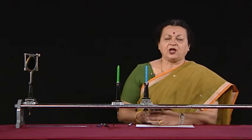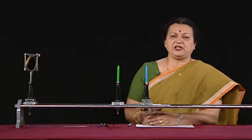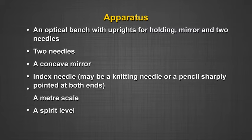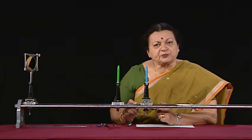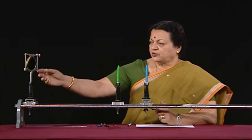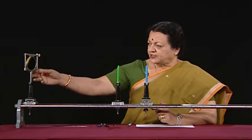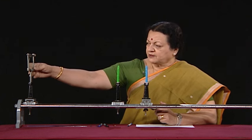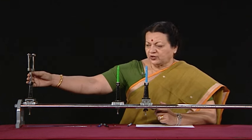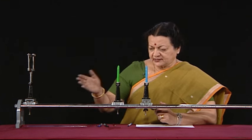The apparatus we need is an optical bench, uprights, and of course the mirror for which we are finding the focal length. We have a concave mirror here which we can place on one of the uprights.